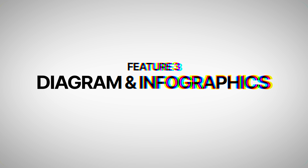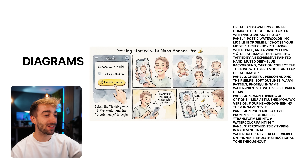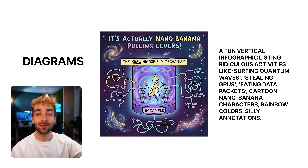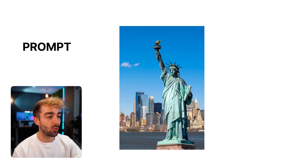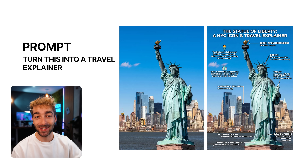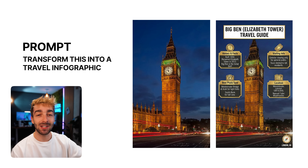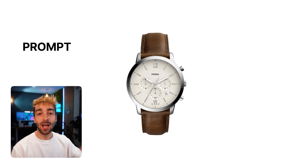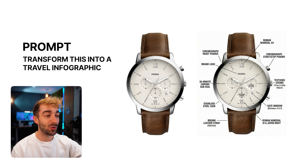Feature three is diagrams and infographics, all powered by Gemini inside Hicksfield. You can build infographics and visual explainers directly from a photo or a prompt. For example, you can take a photo of a landmark and turn it into a labeled travel explainer, or take a photo of London and transform it into a clean infographic. If you've got a product, you can turn it into a visual breakdown of its features — it's just so easy to do.